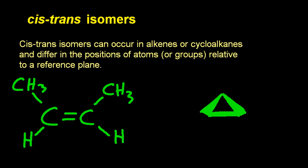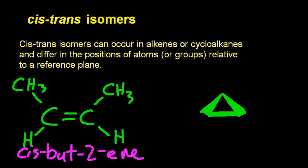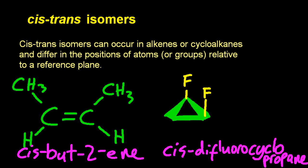So to recap, this but-2-ene, I'm going to need to use cis or trans. And indeed that is cis-but-2-ene. Cis means the same side. Yes, the methyl is on the same side. And so that would also be cis-difluorocyclopropane. The fluorines are on the same side of the plane. Let me just draw that out in full to make it clearer.